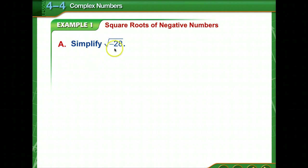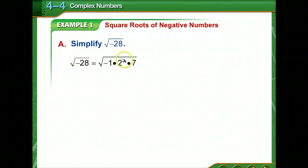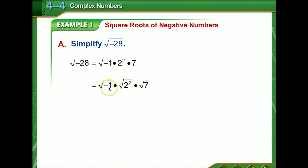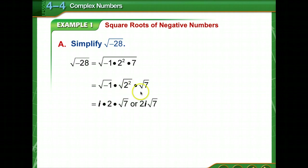We are to simplify the square root of negative 28. We can simplify this as the square root of negative 1 times 2 squared times 7 — since 4 times 7 is 28 and the negative 1 accounts for the negative. We can put each under its own radical. The square root of negative 1 is i, the imaginary unit. The square root of 2 squared is 2, leaving a square root of 7. So we write this as 2i times the square root of 7, putting i behind the coefficient.